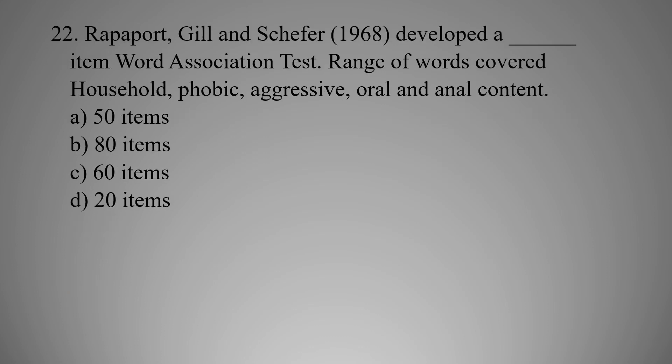MCQ number twenty-two: Rappaport, Gill, and Schaeffer in 1968 developed a word association test covering household, phobic, aggressive, oral, and anal content. How many items? Option A: 50, Option B: 80, Option C: 60, Option D: 20. The right option is C — 60 items.